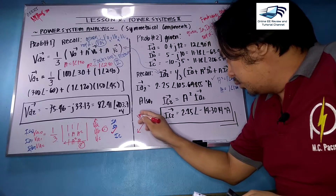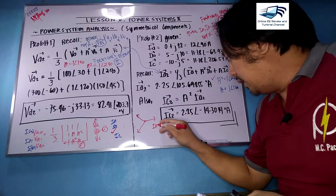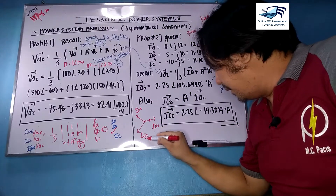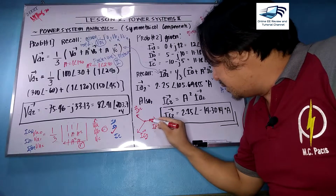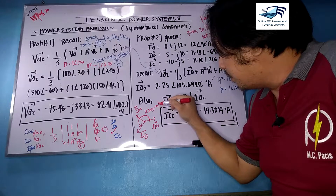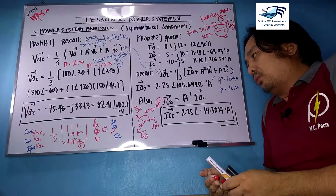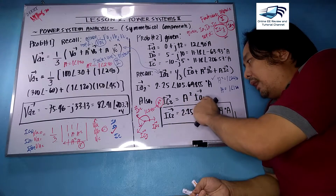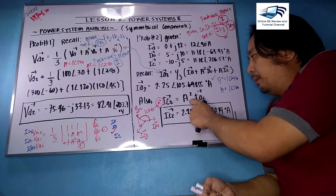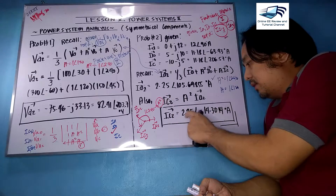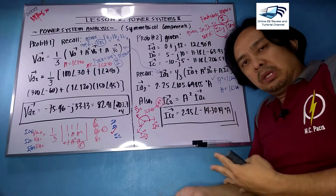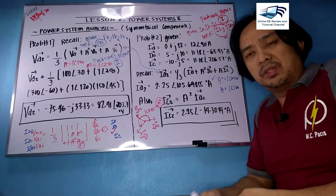Recall the relationship of IC2 in terms of IA2. For negative sequence the relationship of IC2 with respect to IA2 is 1∠240°, which is A-squared, because the negative sequence goes counter-clockwise. Thus IC2 = A-squared × IA2 = 1∠240° × 2.25∠105.855°. The answer is 2.25∠−14.3° amperes.